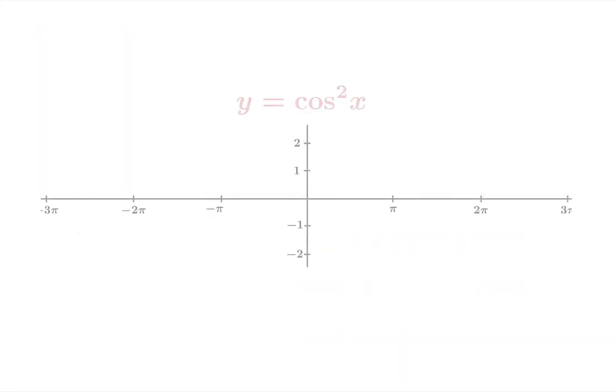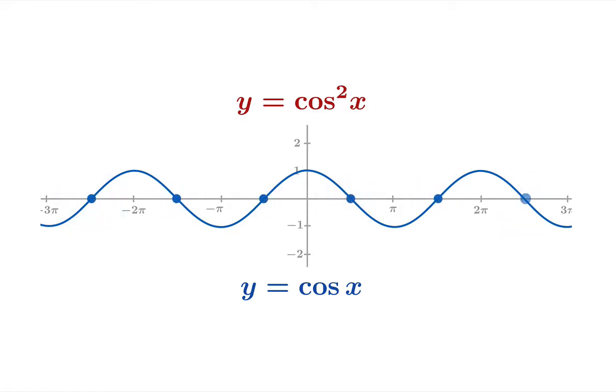Now, let's take a look at cosine squared x. Let's try to understand better what the graph of this function really looks like. We'll first plot cosine x and make some observations. Wherever the value of cosine x was 0, well, of course, when you square that, you're still going to get 0. So these points belong to the graph of cosine squared.